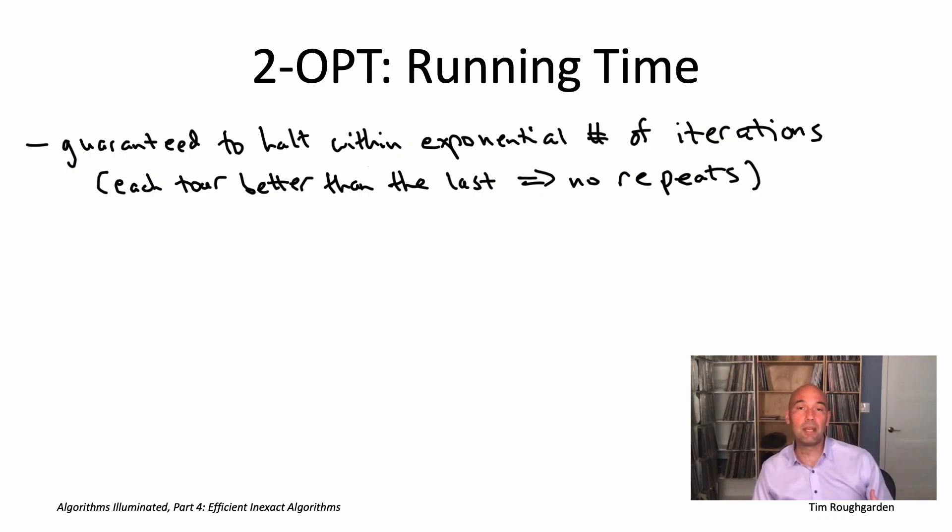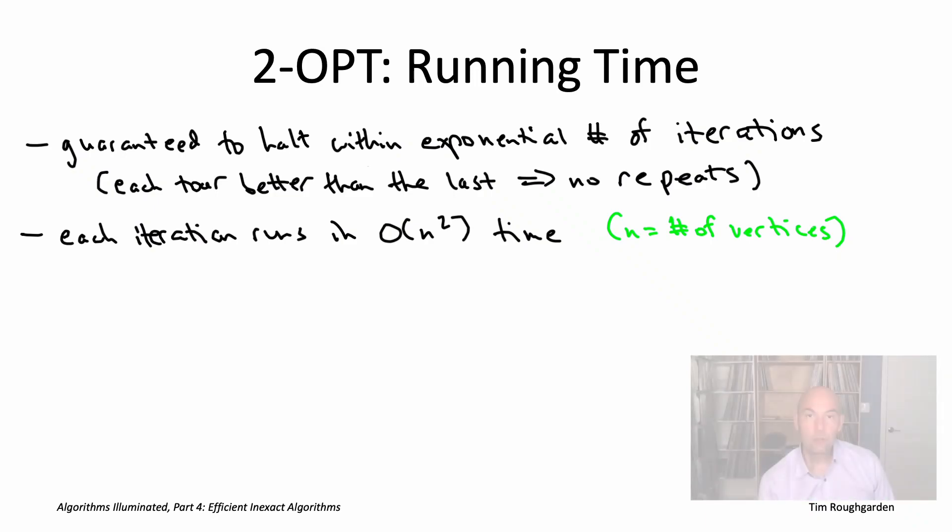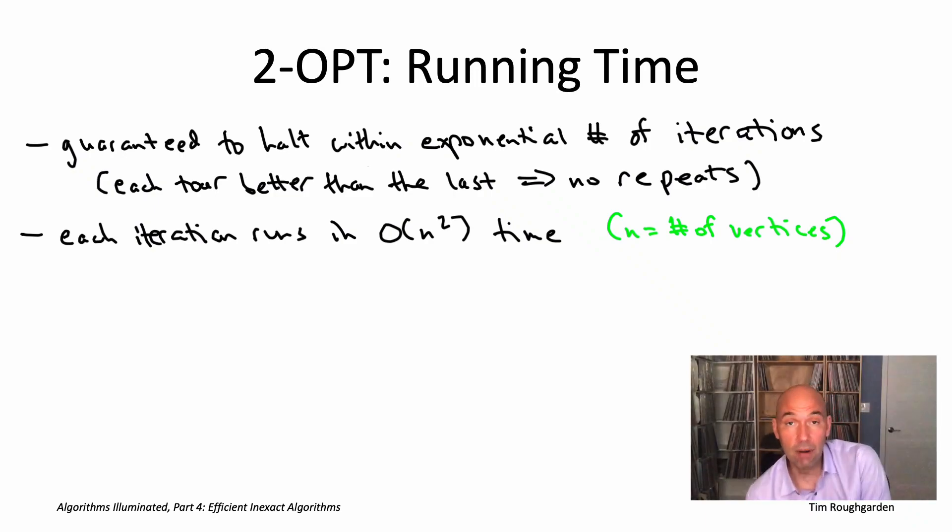Well, whatever the running time is, it's going to be the number of iterations of its main while loop times the amount of time you need to execute one of those iterations. Now, in one of those iterations, basically what you do is you search through all of the possible two changes looking for an improving one. And that's going to take quadratic time if you implement it appropriately. Remember, the exact number of two changes is n times quantity n minus three divided by two. So that's O of n squared possibilities, and that'll be the per iteration running time. So the question then is the number of iterations, because are they always guaranteed to be a polynomial number of iterations.